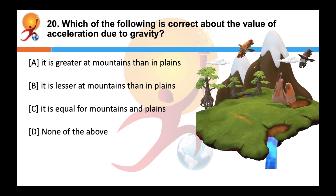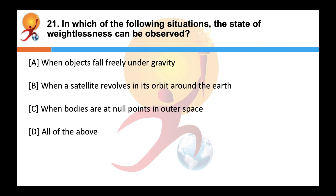Which of the following is correct about the value of acceleration due to gravity? Correct answer is B. The value of acceleration due to gravity decreases with increase in height; therefore, it is lesser at mountains than in plains. In which situation can the state of weightlessness be observed? Correct answer is all of the above: when an object falls freely under gravity, when a satellite revolves in its orbit around the earth, and when bodies are at null points in outer space where two or more forces cancel each other.